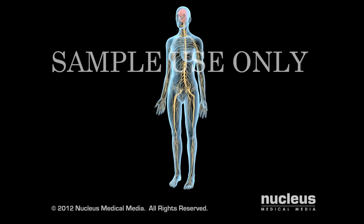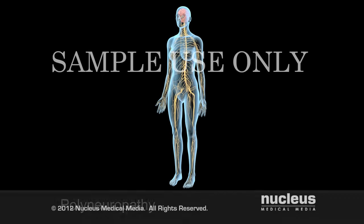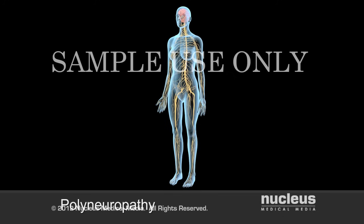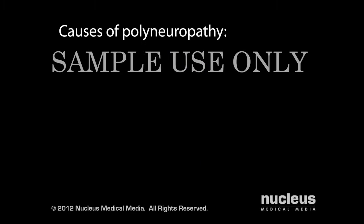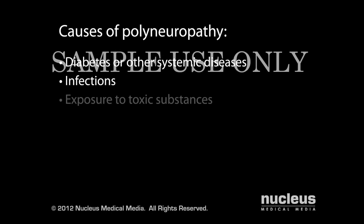Involvement of multiple nerves, called polyneuropathy, is far more common. Damage typically begins in the nerves farthest from the central nervous system and progresses symmetrically. Polyneuropathy can be caused by diabetes and other systemic diseases, infections, or exposure to toxic substances.